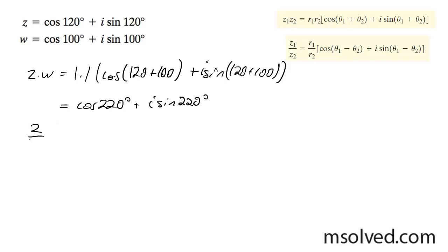For z divided by w, we get the cosine of 120 minus 100 plus i sine of 120 minus 100.